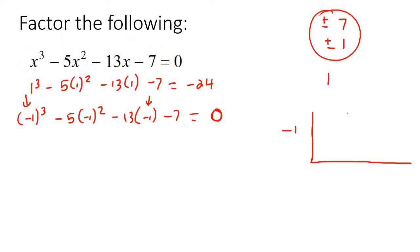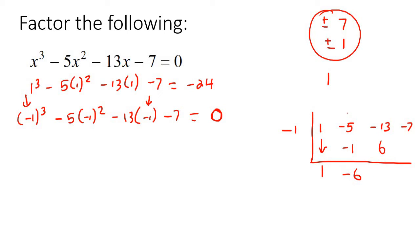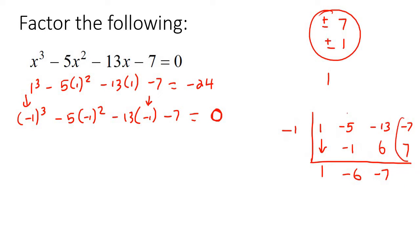Remember the lesson where we spoke about synthetic division? If not, go check that out quickly and then come back here. Because what we're pretty much doing is we're dividing this now by this factor over here. Remember the way synthetic division works — you bring this 1 down, and then you're going to multiply these two together, which is negative 1. Then you're going to add these together, which is negative 6. Then you're going to multiply these together, which is positive 6, and then you're going to get negative 7. And then you're going to multiply these two together, which is positive 7.